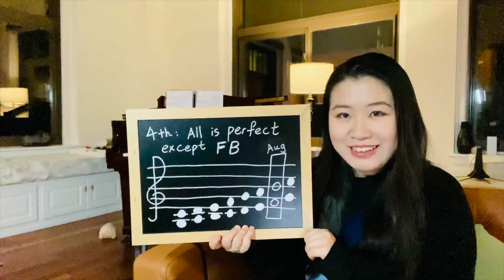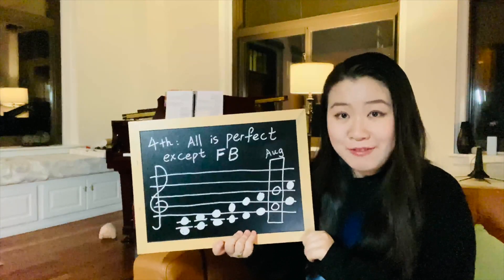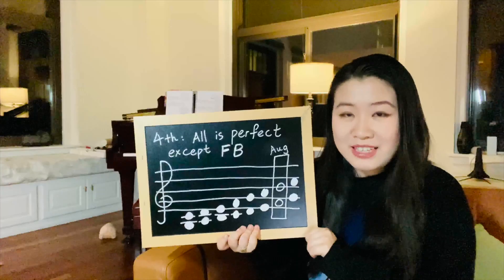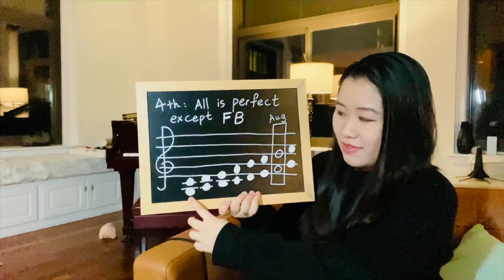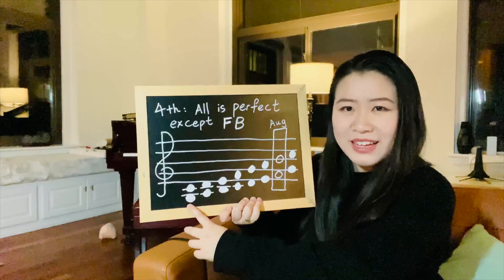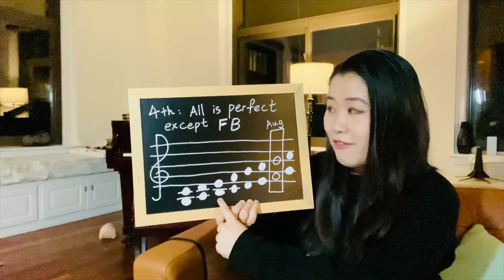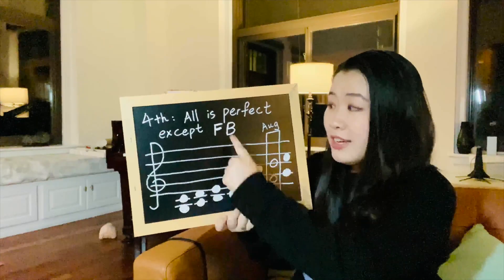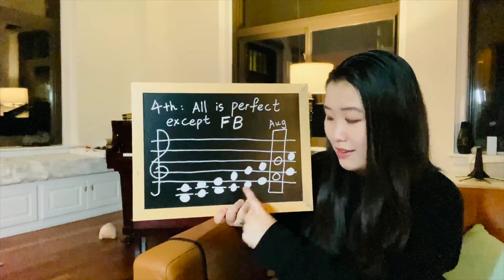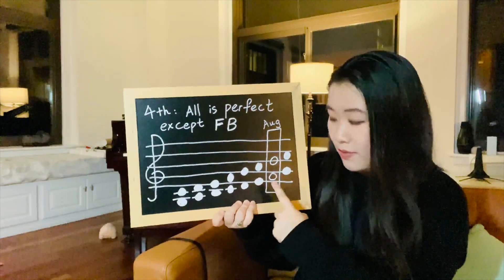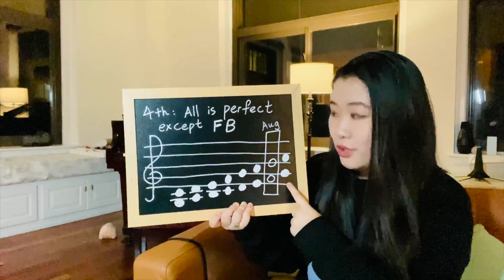If the interval is medium sized — meaning a fourth or a fifth — we follow a rule called 'all is perfect except B-F.' This means that on the piano white keys, all fourths and fifths are perfect, unless you have a B and an F. Let's try it out: G to C — not a B and an F, so it's perfect. A and D — perfect. B to E — we have a B, but not an F; you need both to trump the perfect rule, so perfect. C to F — perfect. D to G — perfect. E to A — perfect. F to B — there it is, our only exception — this is an augmented fourth. G to C — perfect again.